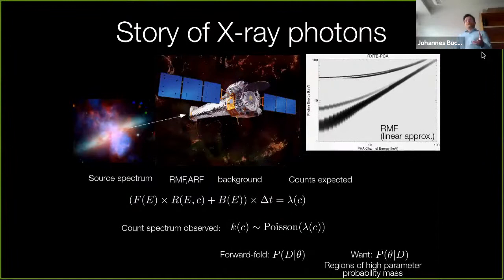We've established this forward folding that gives you the probability to produce some data assuming all of this process, assuming a source spectrum, instrument model and so on. And that we will casually call the likelihood. But what we actually want is the probability distribution of the source spectrum parameters. We want the probability distribution over the parameter space not over the data space, and we want to identify those regions with high probability.